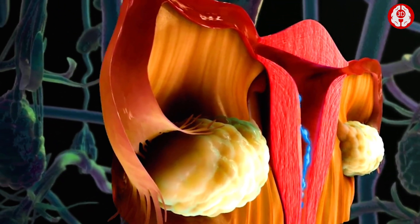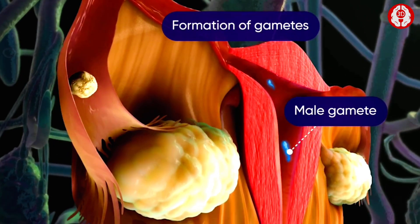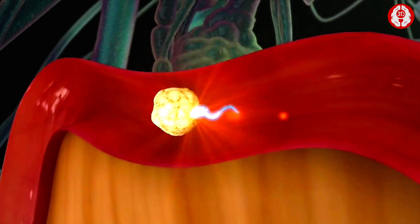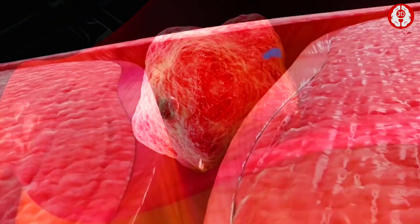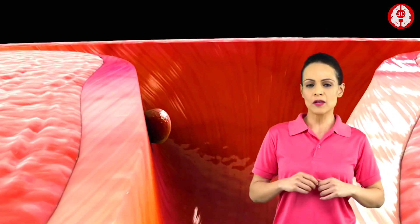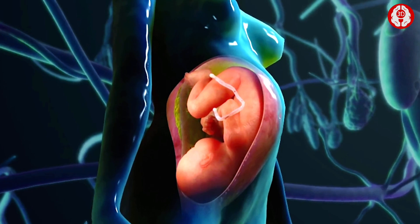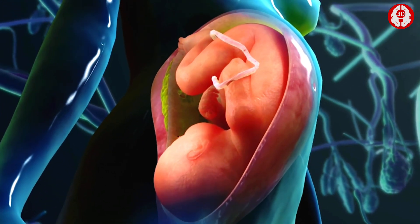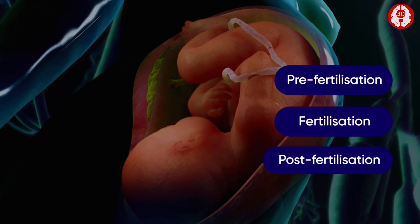Sexual reproduction is characterized by a chain of events starting from the formation of gametes, fusion of these gametes to form a zygote, and finally culminating into the development of the zygote to form an offspring. The events in the entire cycle of sexual reproduction can be categorized as pre-fertilization events, fertilization, and post-fertilization events.